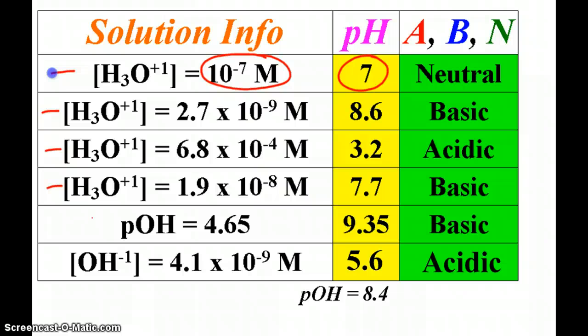If I give you pOH, then you simply have to subtract from 14, because we know that pH plus pOH always equals 14. And then the last way, if I give you the hydroxide ion concentration, then you have to do both of those steps. When you take the negative log of hydroxide, it will give you pOH, which you then subtract from 14 to find pH.